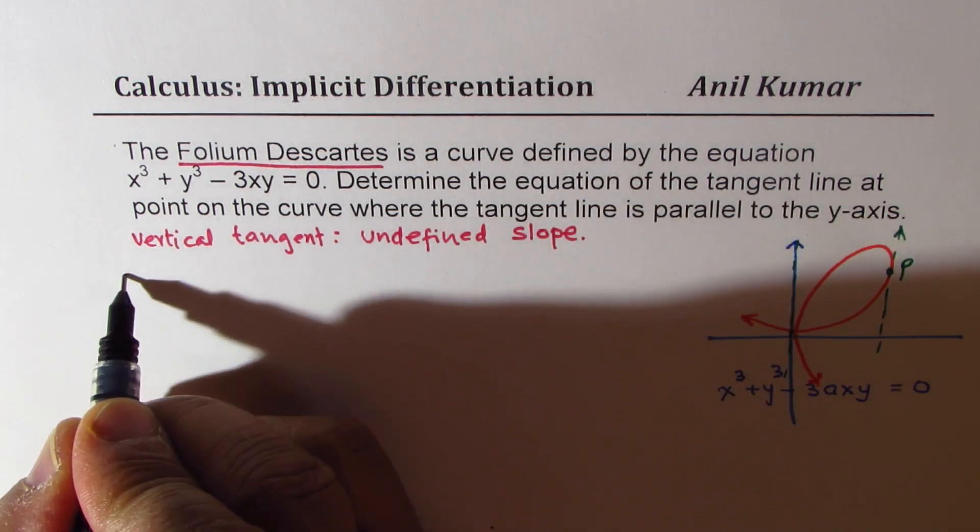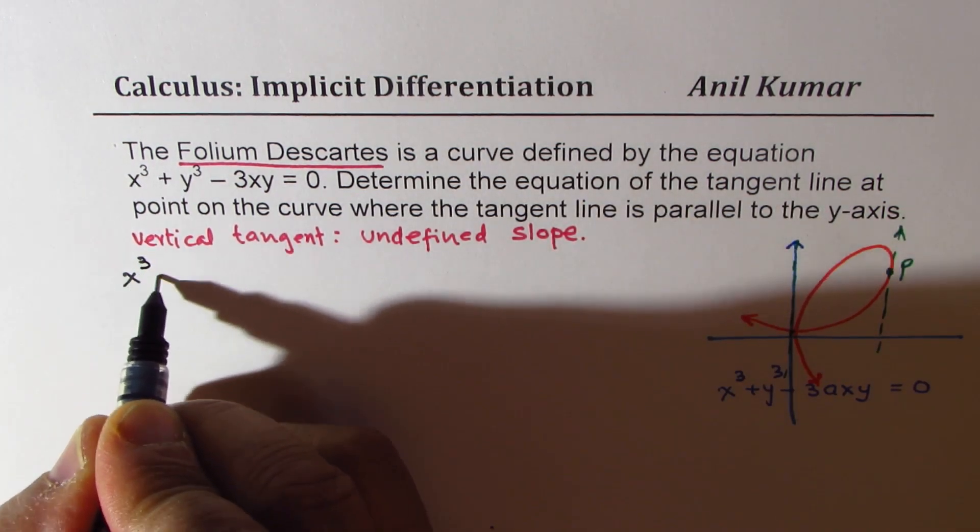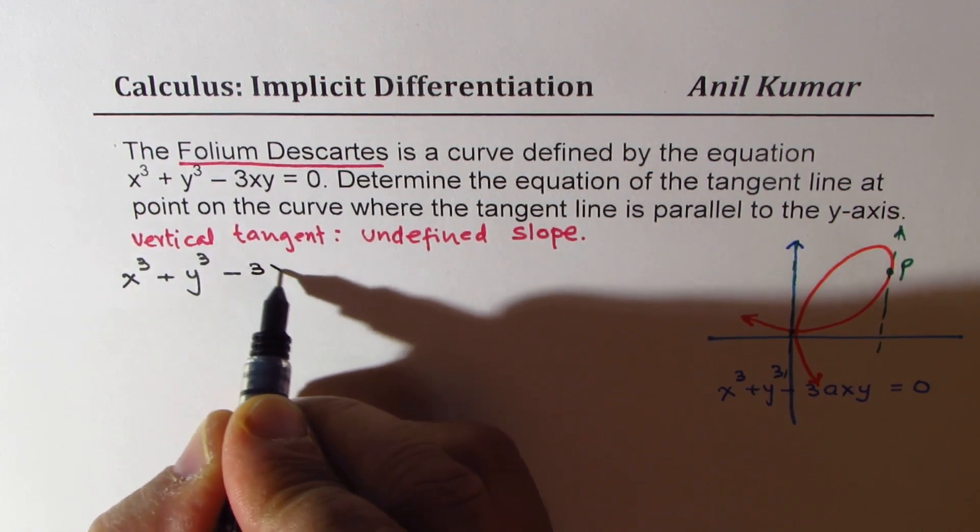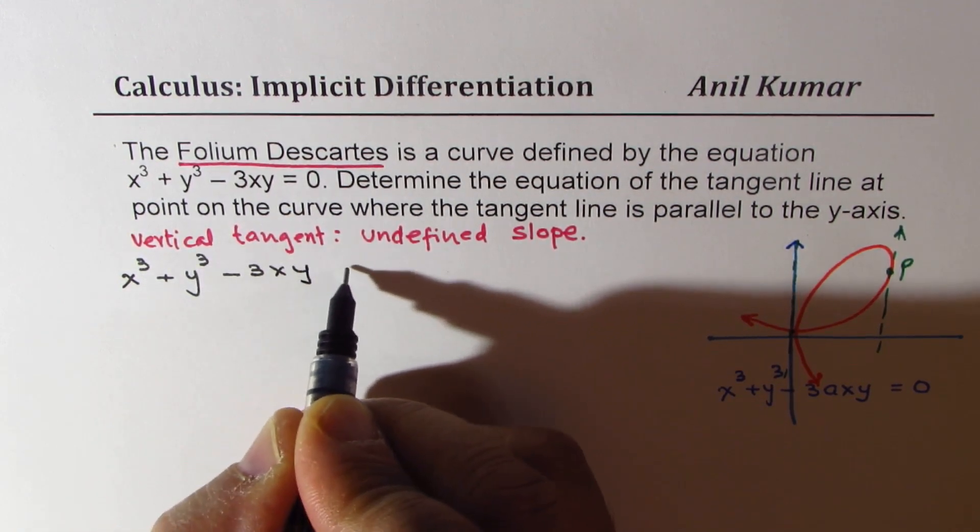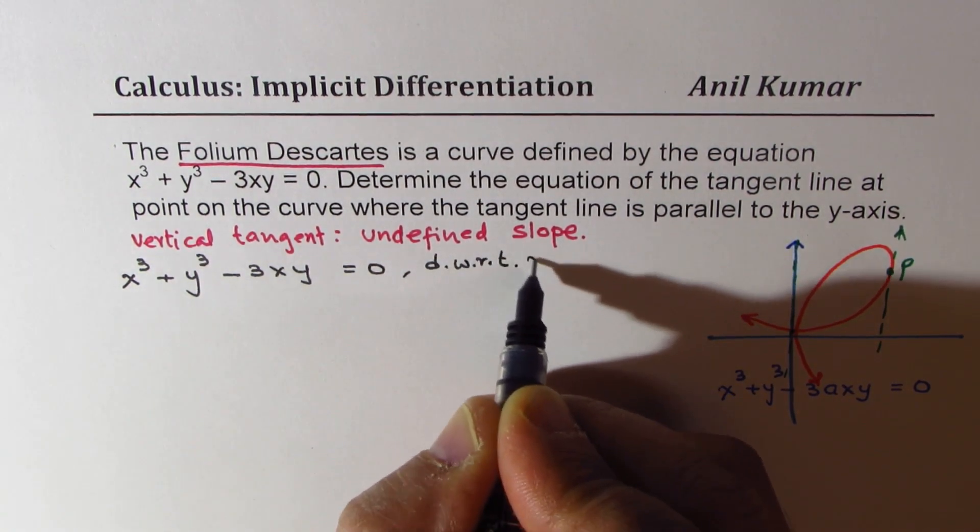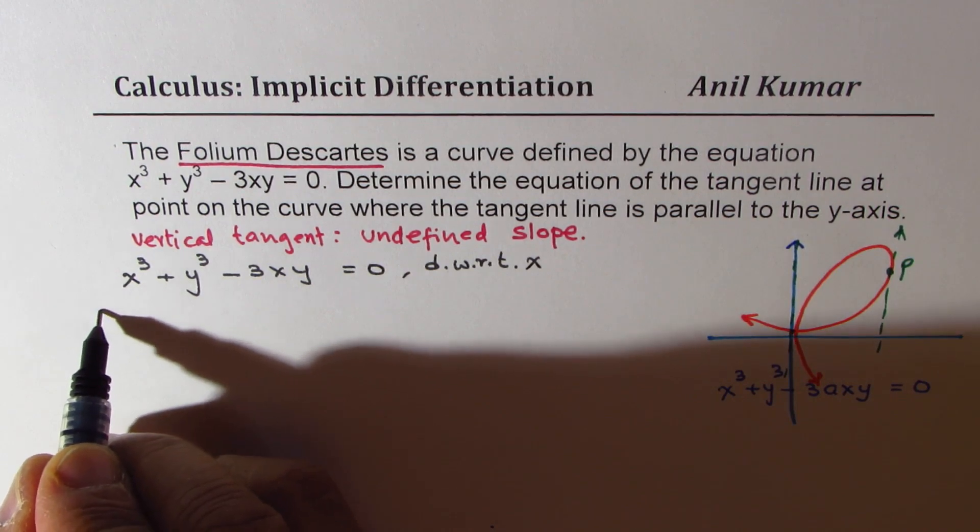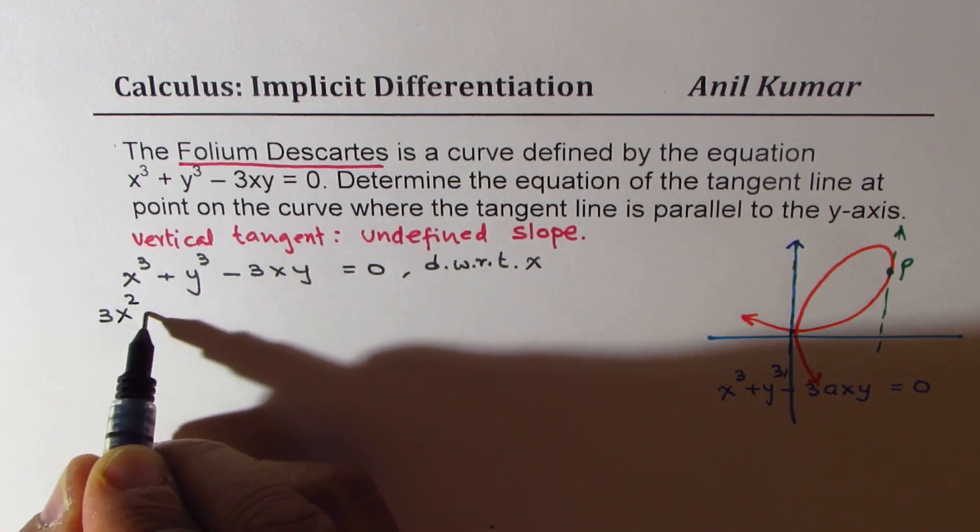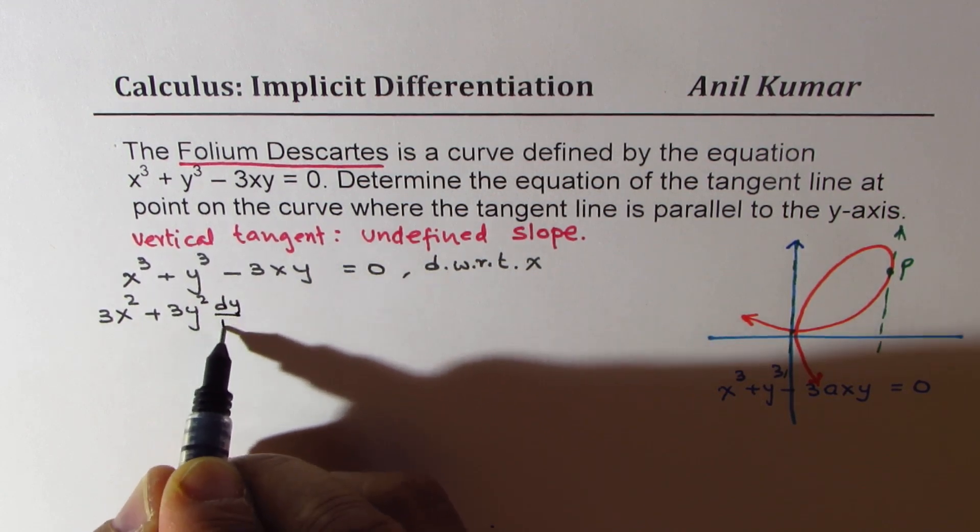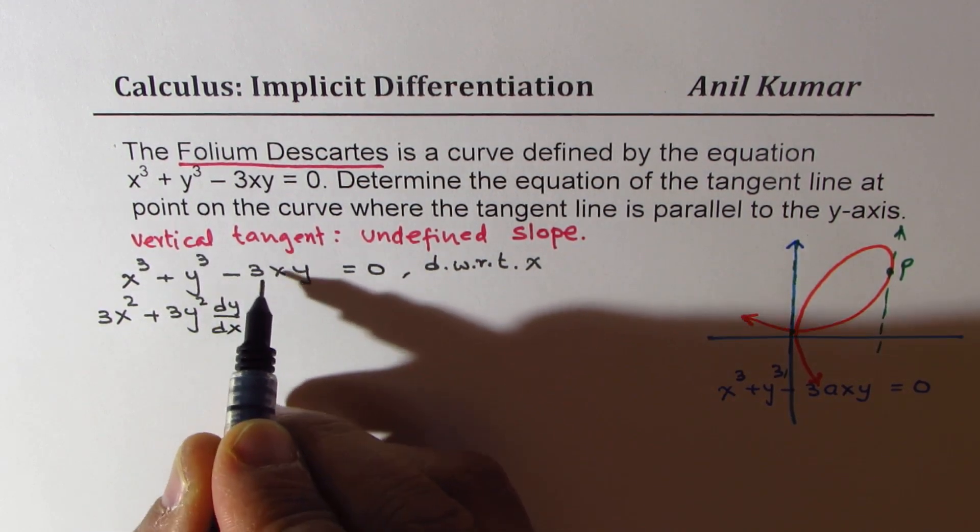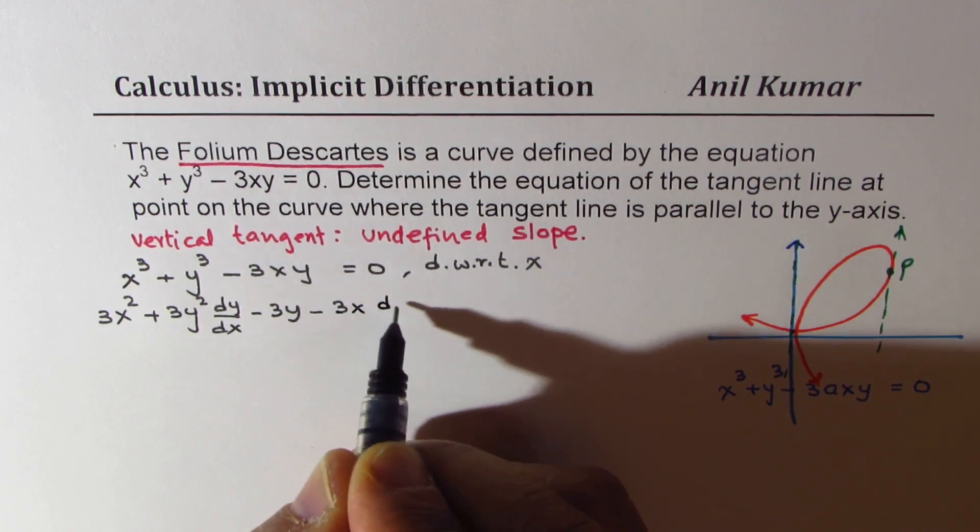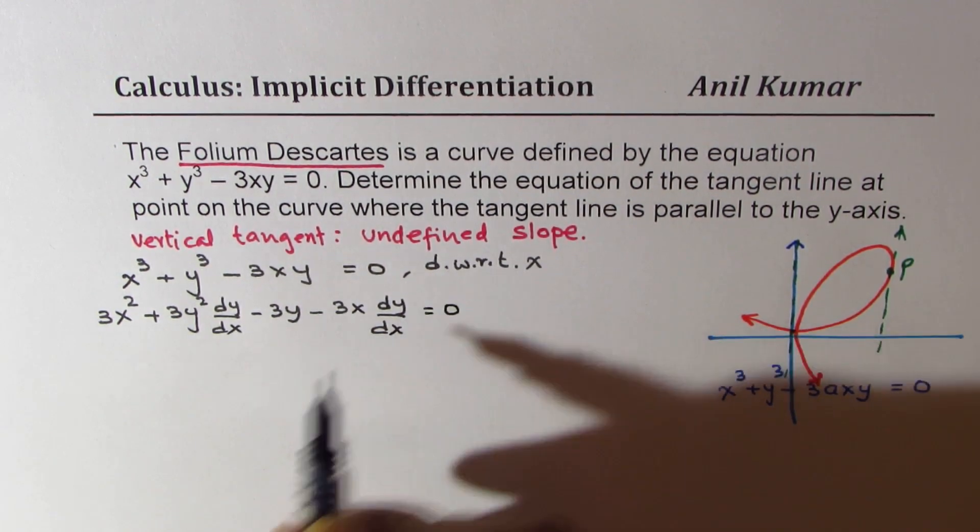Equation given to us is x cubed plus y cubed minus 3xy equals to 0. Let's differentiate with respect to x. So we get 3x squared plus 3y squared dy/dx minus 3y minus 3x dy/dx equals to 0.